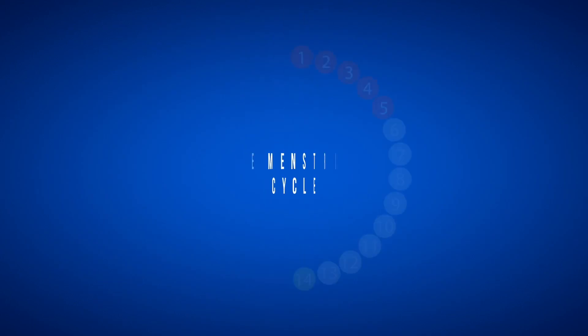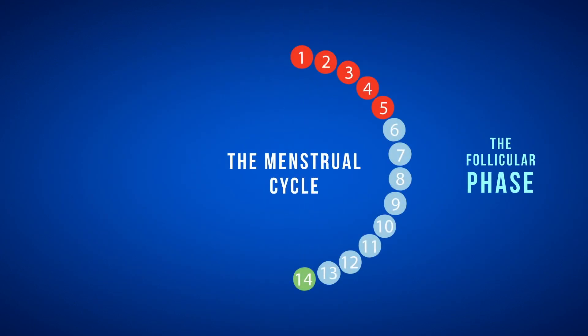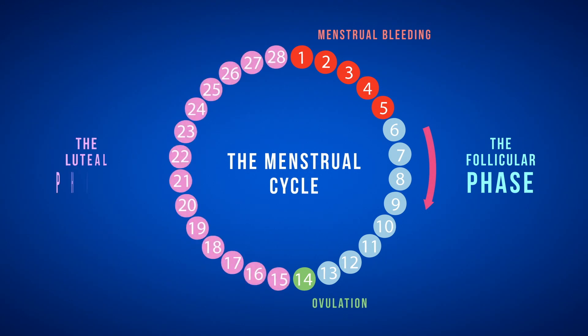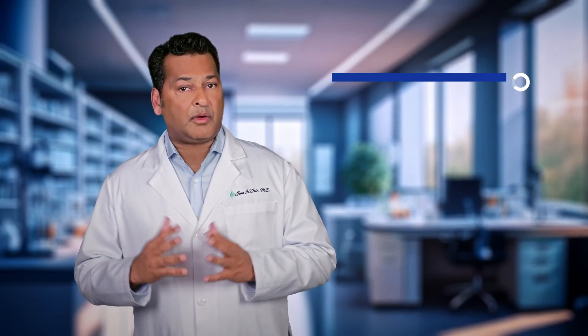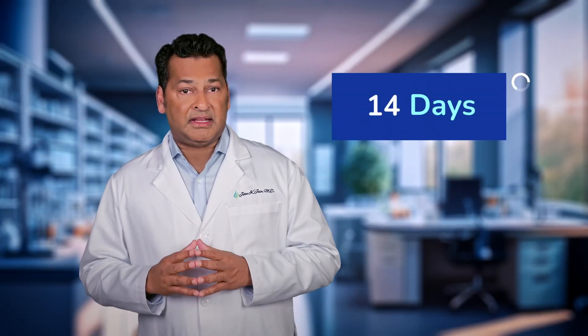The menstrual cycle has two phases. The first phase, called the follicular phase, starts with the first day of menstrual bleeding and lasts until the day of ovulation. The second phase, called the luteal phase, runs from the day of ovulation until the onset of bleeding at the next menstrual period. The second phase is consistent among women, lasting around 14 days, regardless of menstrual cycle length.